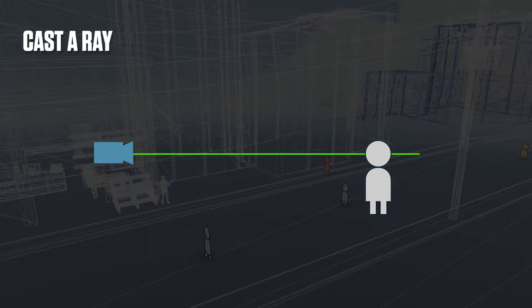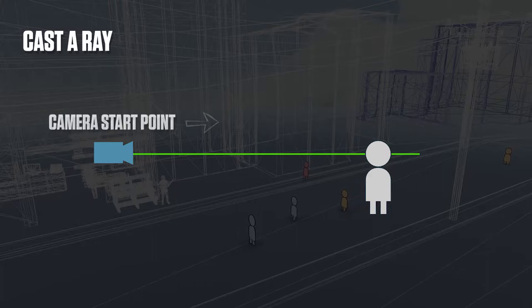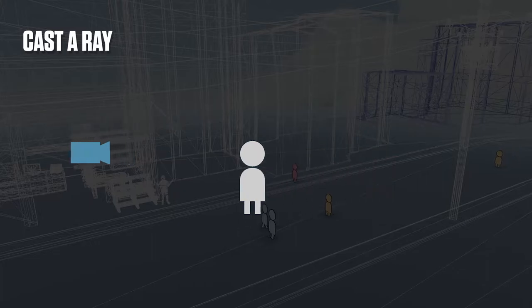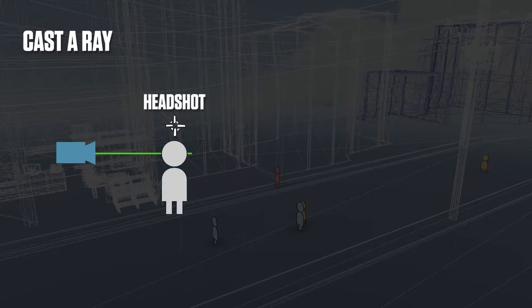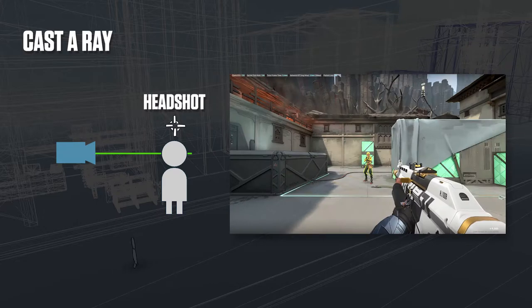In most 3D software, all you need to do is cast a ray to see if a line intersects with anything. This usually requires a starting point and a direction. In this case, we start at our camera and shoot the ray forward. When the ray hits a point, we can collect the data and display the visuals.